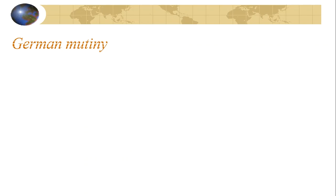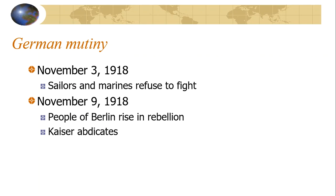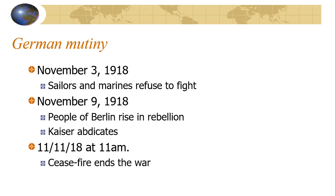So how does the war end? Eventually the Germans give up. On November 3rd, 1918, sailors and Marines refused to fight. By November 9th, the people of Berlin rose up in rebellion and the Kaiser abdicated. With the German people turning against their government and the war effort declining, an armistice came. On the 11th day of the 11th month, 1918, at 11 a.m., a ceasefire ended the war. A treaty would come afterwards to wrap up all the loose pieces — and that will be the focus of the next lecture.